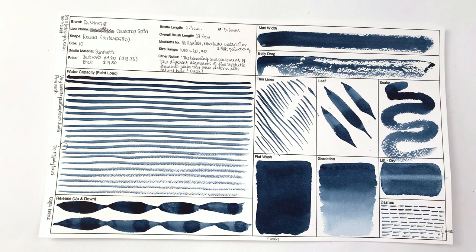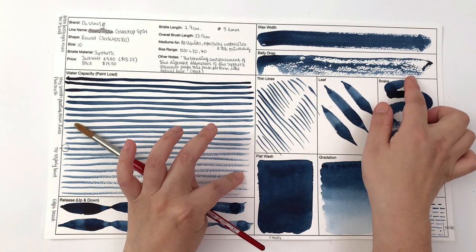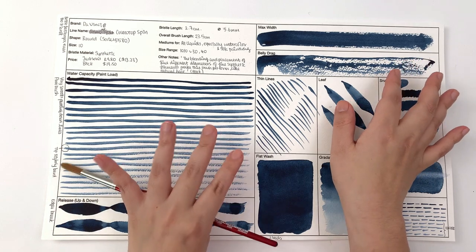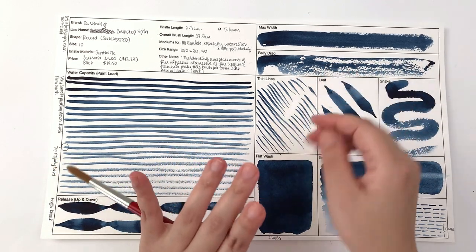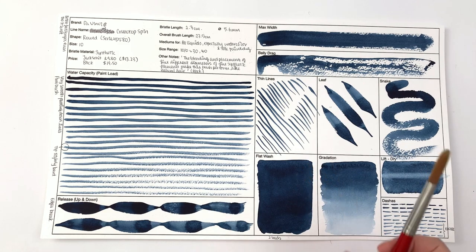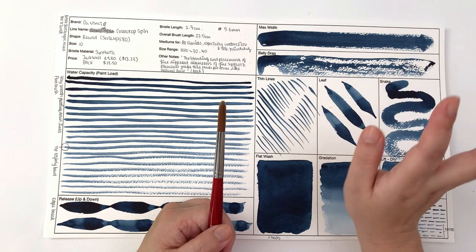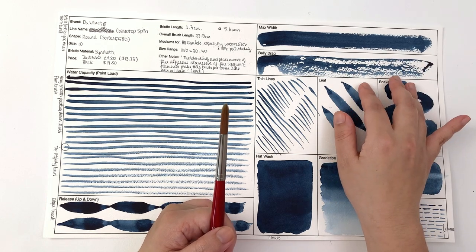For the belly drag you can see that it's very dry so it would be good if you want to do dry brushing. Thank you by the way to those of you who commented that actually belly drag is really useful for knowing if the brush is good at doing dry brushing, so we now know what a belly drag is good for.